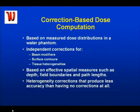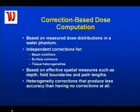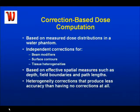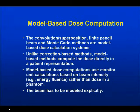We're really talking about types of calculations that you have to use a computer for — these aren't hand calculations. The correction-based dose calculation models that existed really up until the mid-90s were essentially based on calculations that evolved from hand calculations. So they're really based on measured dose distributions in a water phantom. You then had independent corrections for the beam modifiers — for example, wedges and compensators — for surface contours, and for tissues within the body. They're really based on effective spatial measures such as the depth in the field, the field boundary, and path lengths.